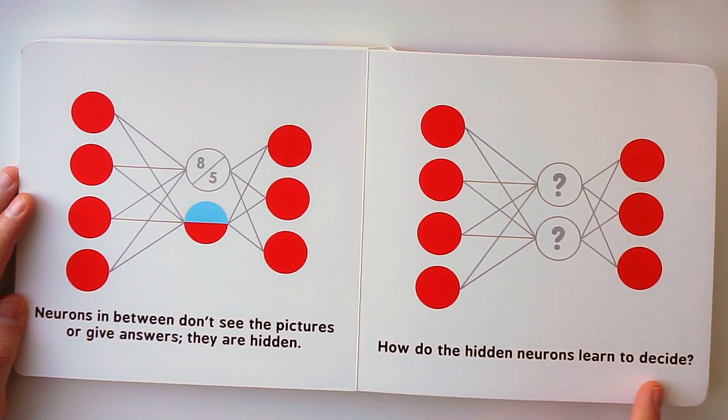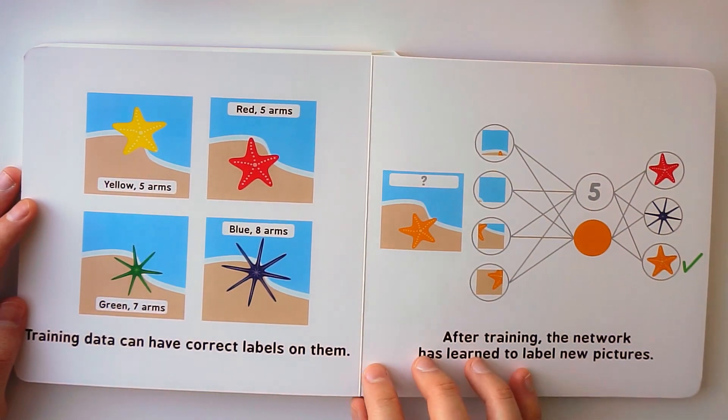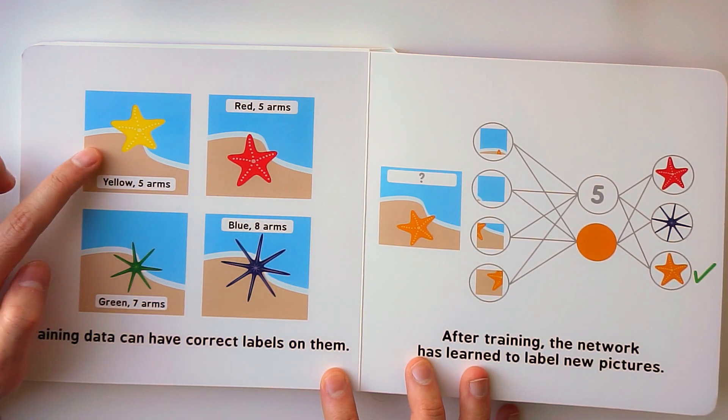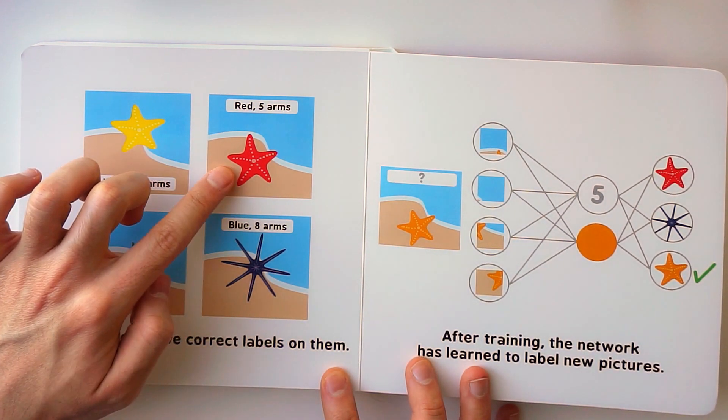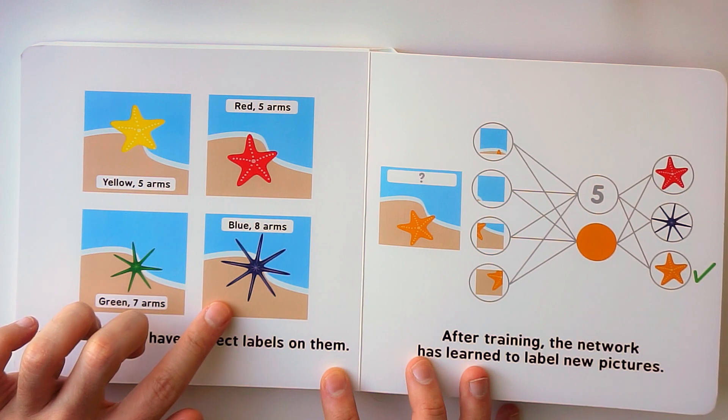How do the hidden neurons learn to decide? Training data can have correct labels on them. This is a yellow starfish with five arms. And this is a red starfish with five arms. This is a green starfish with seven arms. And this is a blue starfish with eight arms.